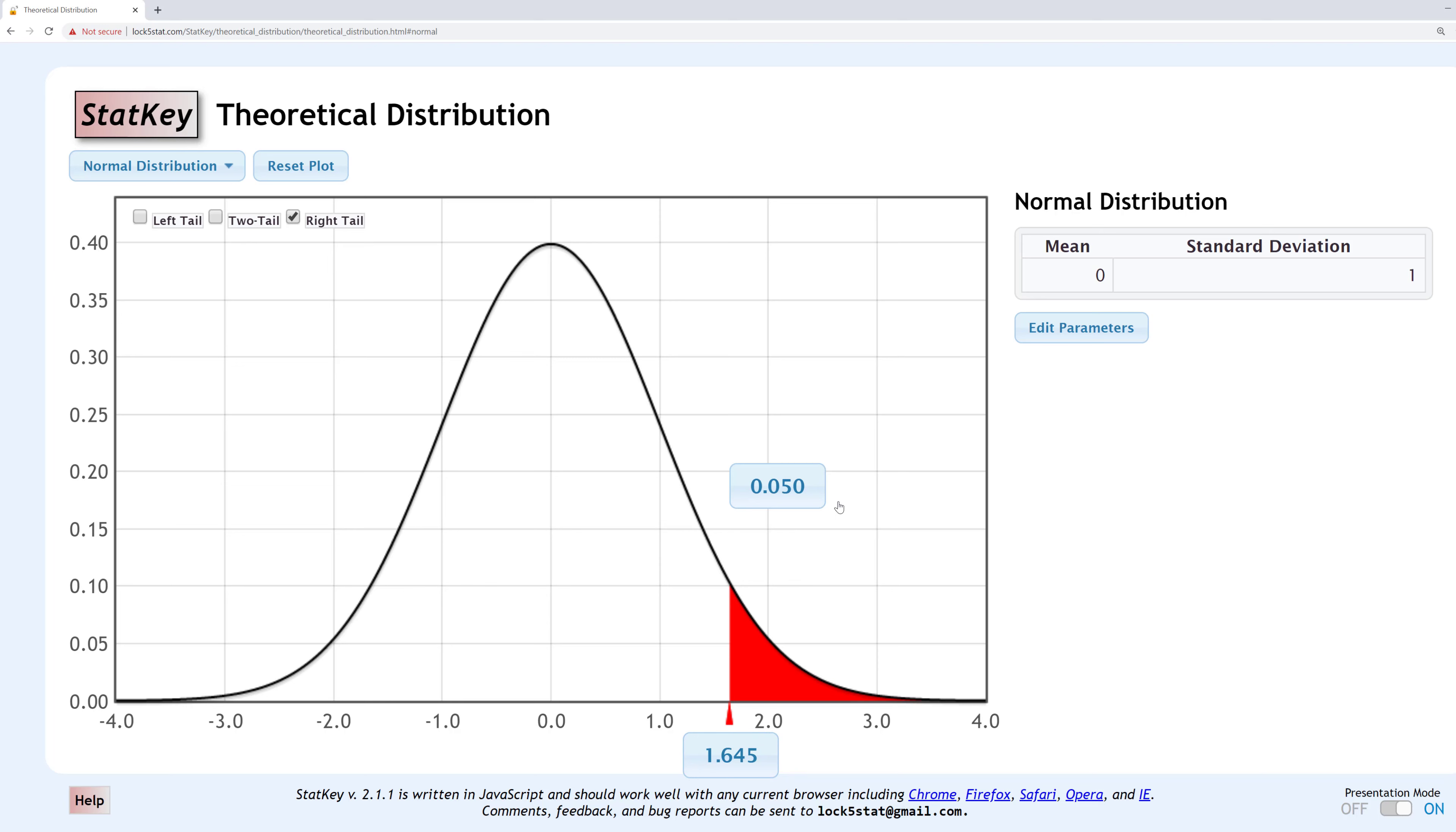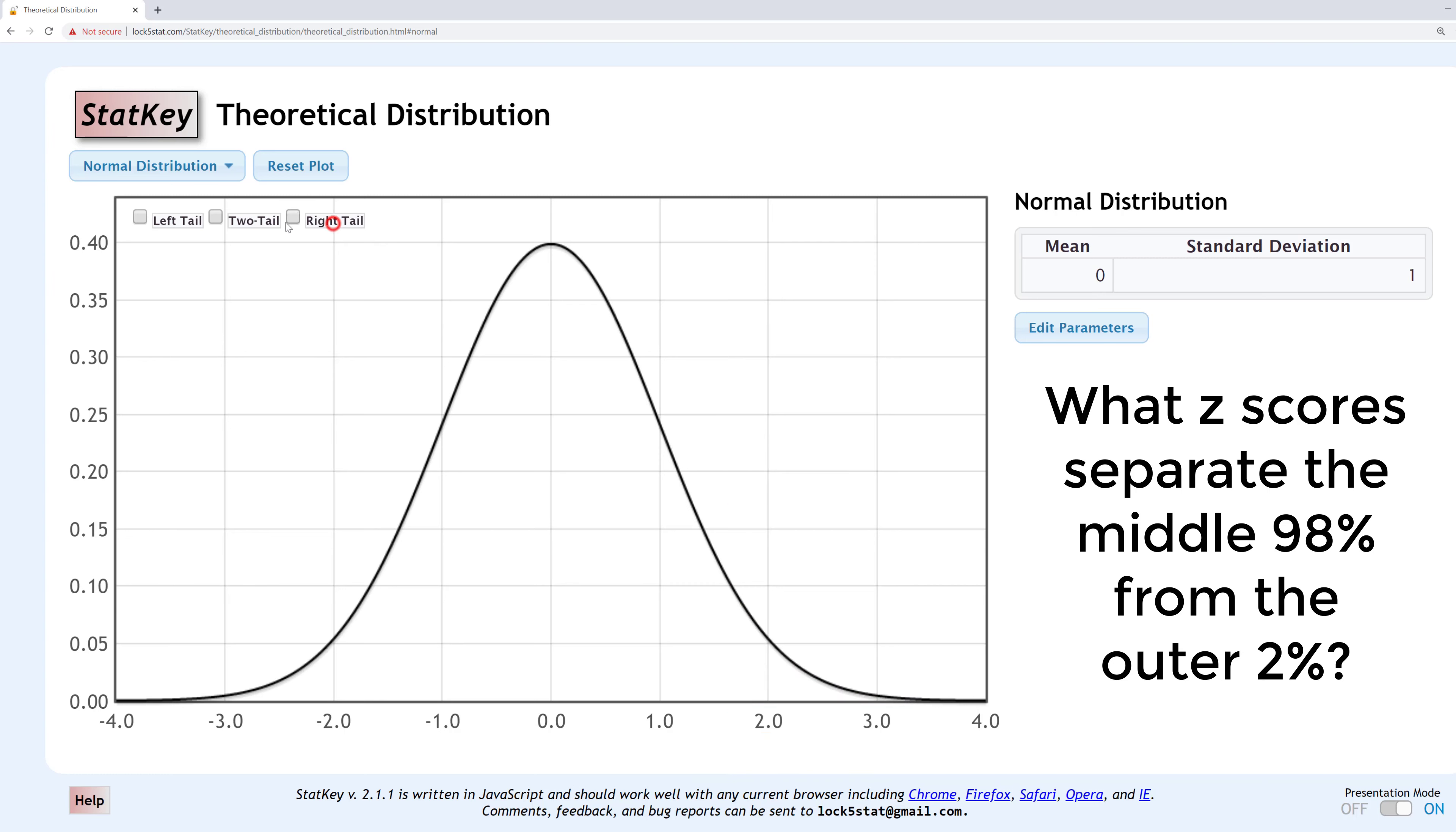One last example. What Z-scores separate the middle 98% from the outer 2%? This is a two-tailed example. There are two ways to approach this. If there's 2% on the outside, that puts 1% or 0.01 in each tail.